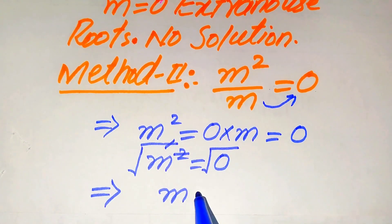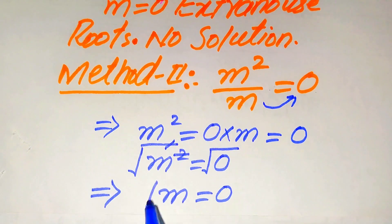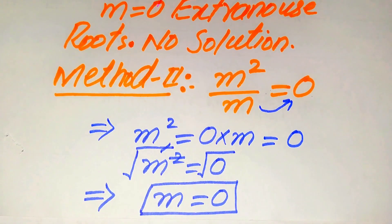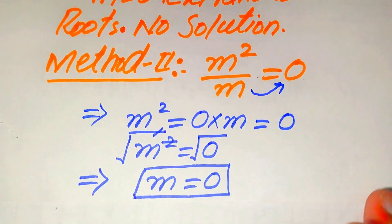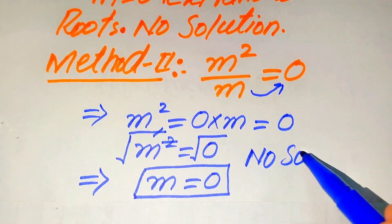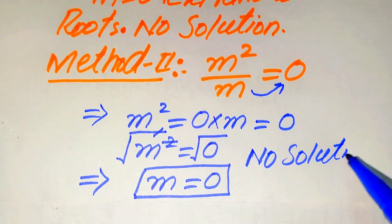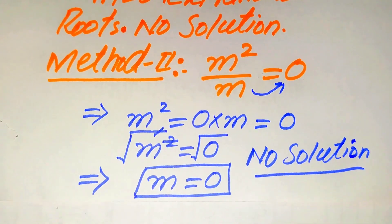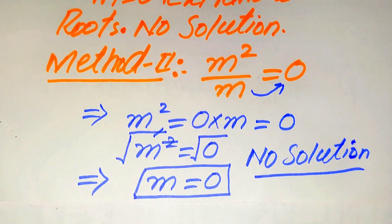As we concluded in the first method, m = 0 is an extraneous root and cannot satisfy the given question statement. So we say that this equation has no solution in general. That is our final answer. Thank you so much for watching this video — please subscribe to my channel for more exciting videos.